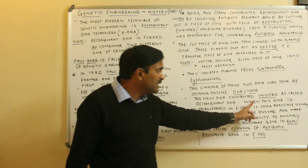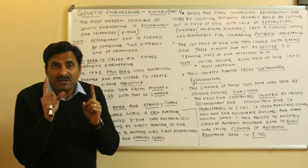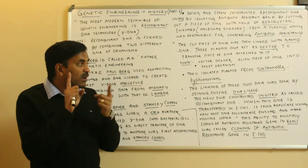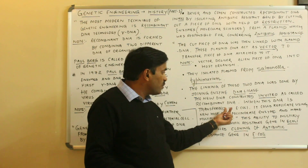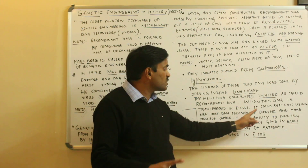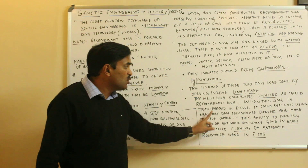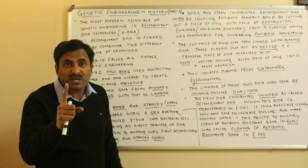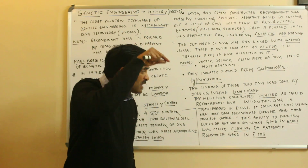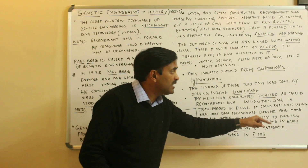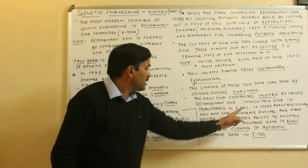When this recombinant DNA is transferred into E. coli — a bacterial cell acting as the host cell — Boyer and Stanley Cohen stated that as soon as the recombinant DNA enters the E. coli, it can replicate using the host's DNA polymerase enzyme, which is the enzyme responsible for replication.